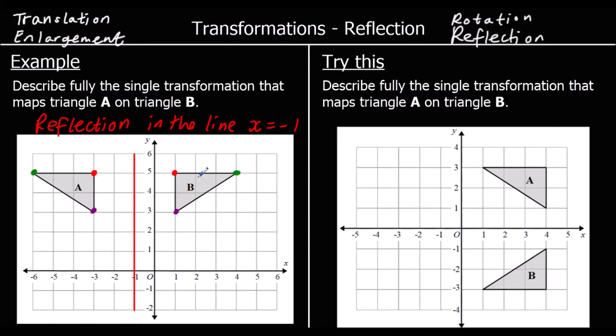Here's a question for you to try: describe the transformation that maps triangle A onto triangle B. Again, we can see it's a reflection — so that's our first bit of information: reflection. And we need to know in which line. This time it is the x-axis, or the line y equals zero.